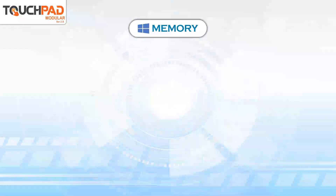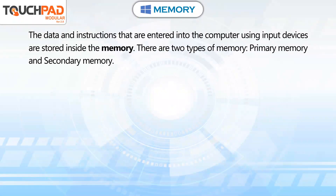Memory. The data and instructions that are entered into the computer using input devices are stored inside the memory. There are two types of memory: primary memory and secondary memory.